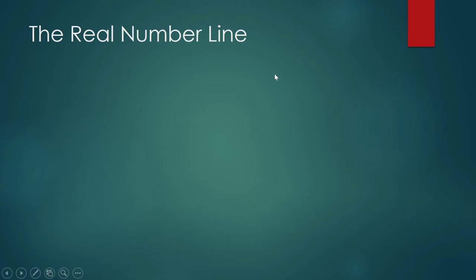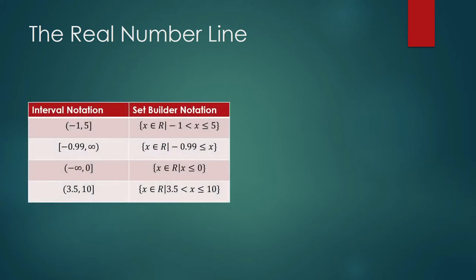I will go back to the real number line. Last time I spoke about the set of real numbers and the common subsets of real numbers. I'm going back to the real number line because some of you are able to graduate from high school, enter a university, and still cannot recognize interval notations for the set of real numbers. For example, this notation — this is an interval notation for a subset of the set of real numbers. The number line goes to positive infinity on the right and negative infinity on the left. This one is the set of real numbers strictly greater than negative one but less than or equal to five.